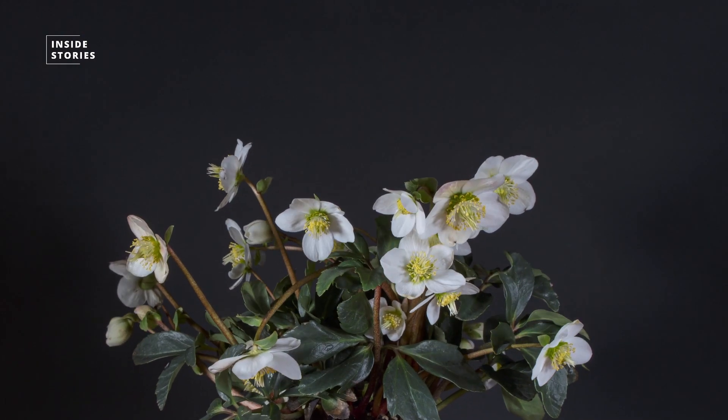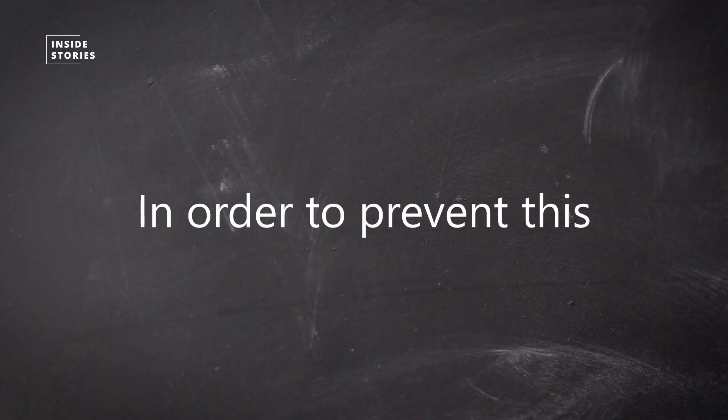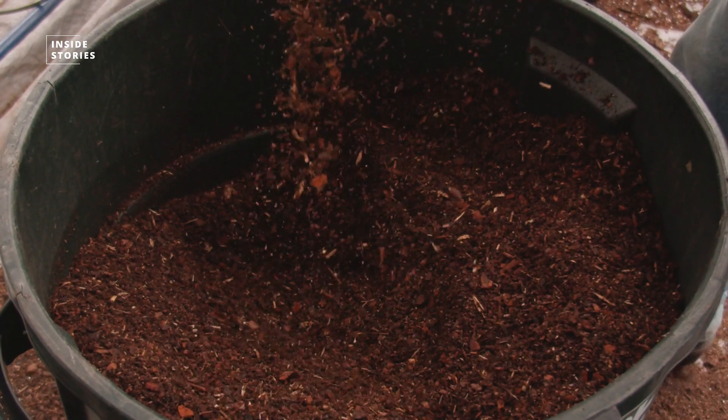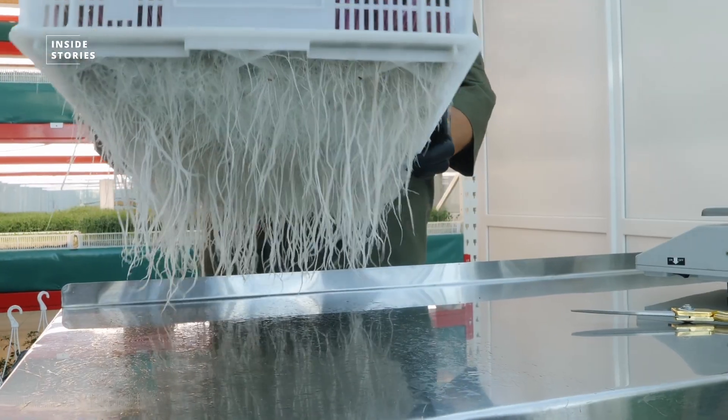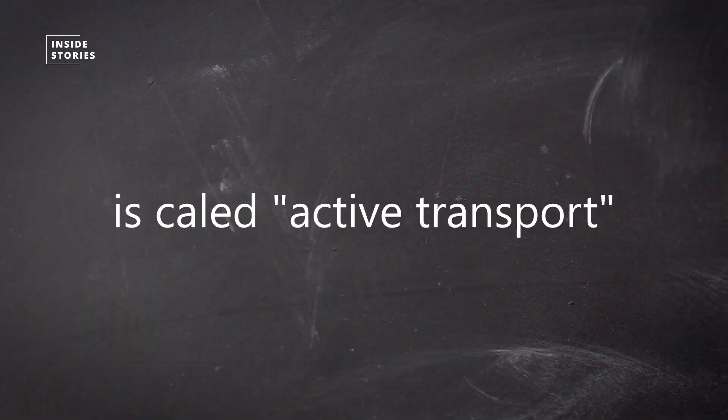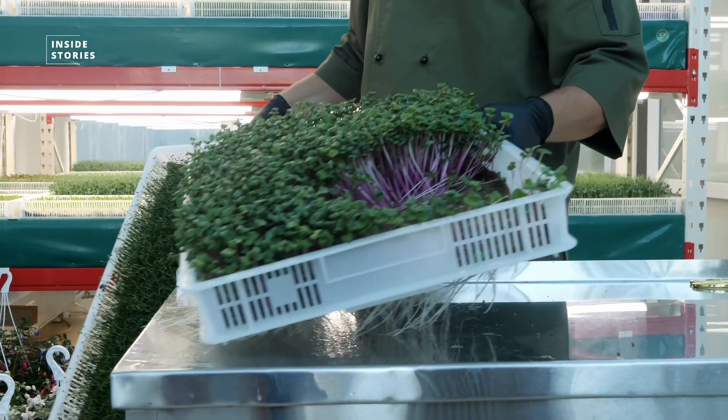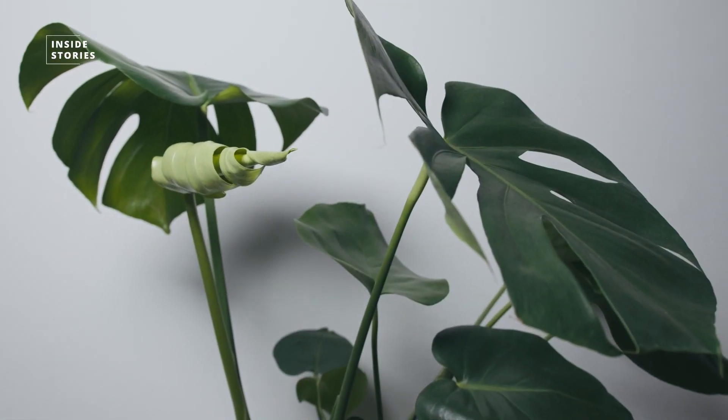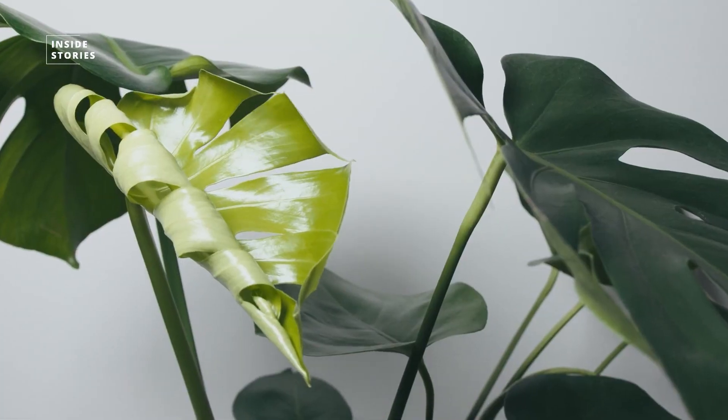The plant would therefore no longer have a water supply. In order to prevent this, ions are constantly being pumped from an area of low concentration in the soil to an area of high concentration in the root. This process is called active transport, which decreases the water potential of the root to a point where it becomes negative enough to create a concentration gradient that allows osmosis to occur again.